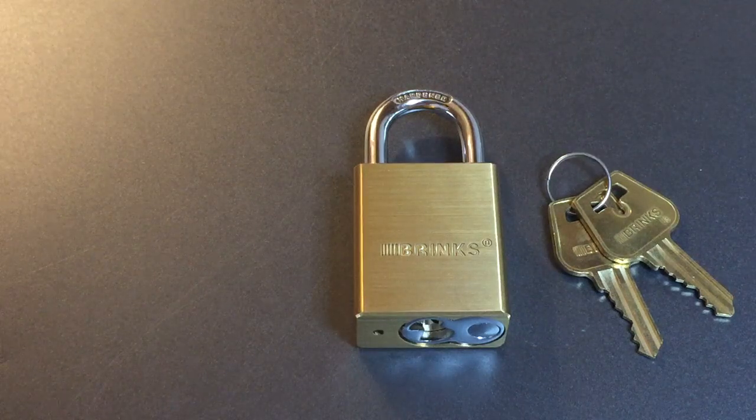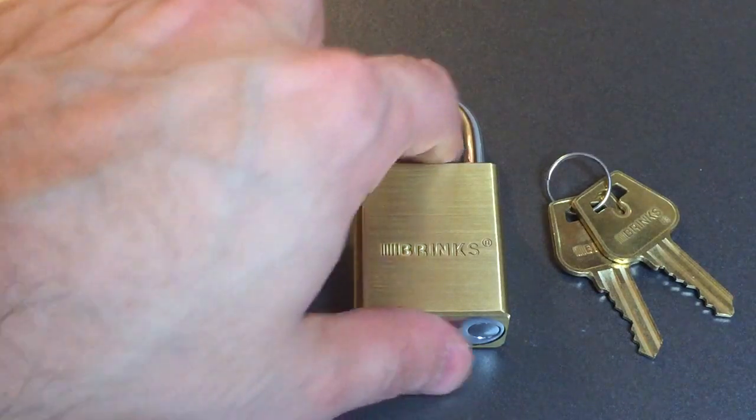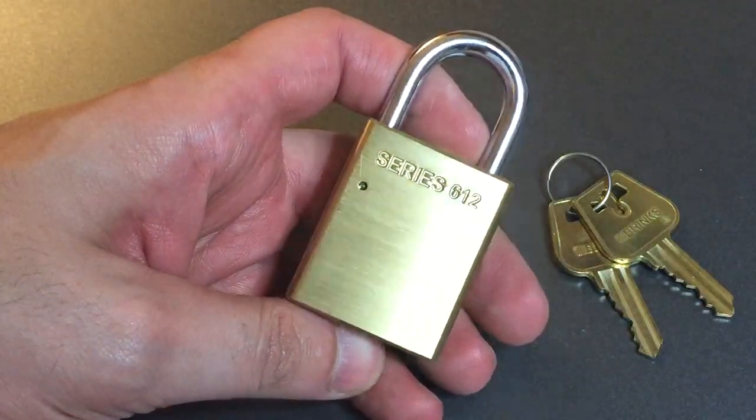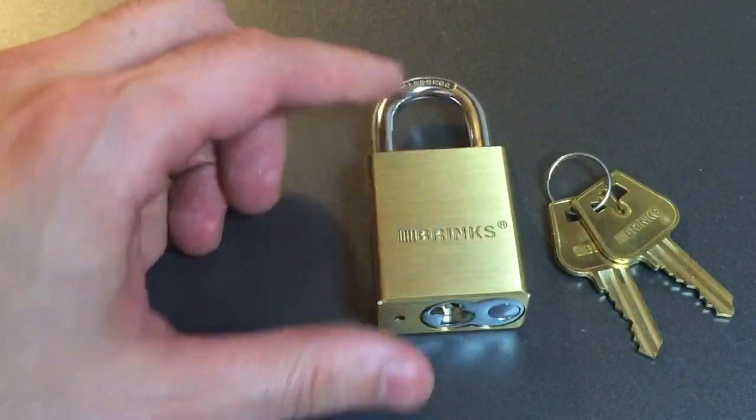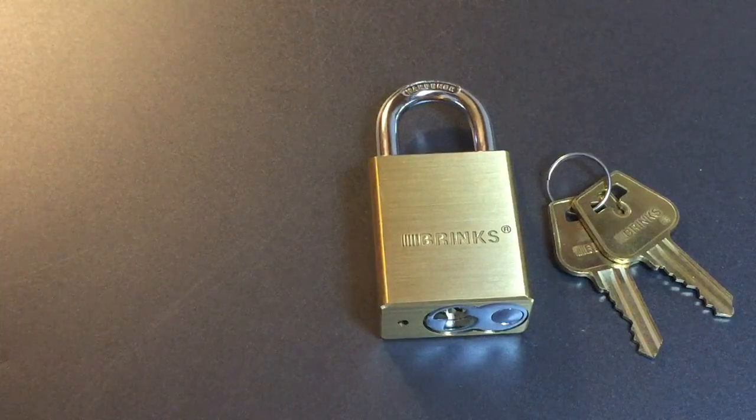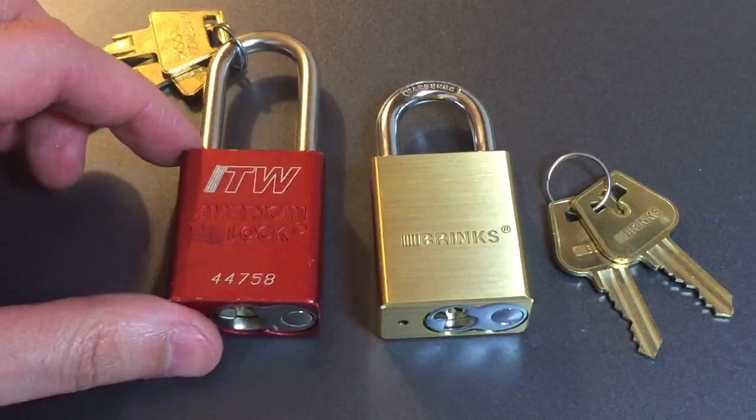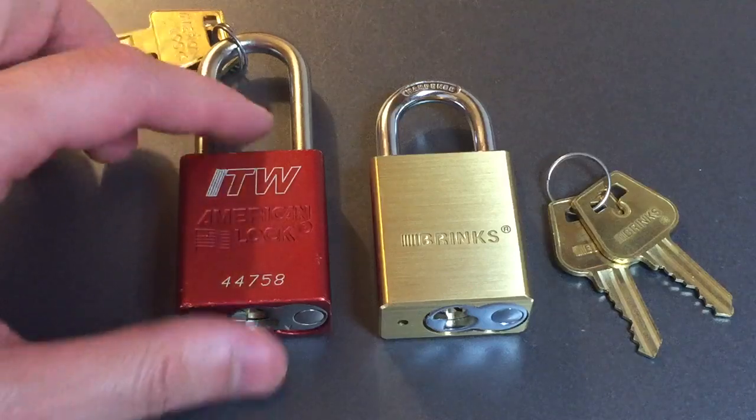This is the Lock Picking Lawyer and the lock I have for you today is the Brinks Series 612. This is a solid brass padlock that is identical in size to this lock, the American Lock Series 1100.